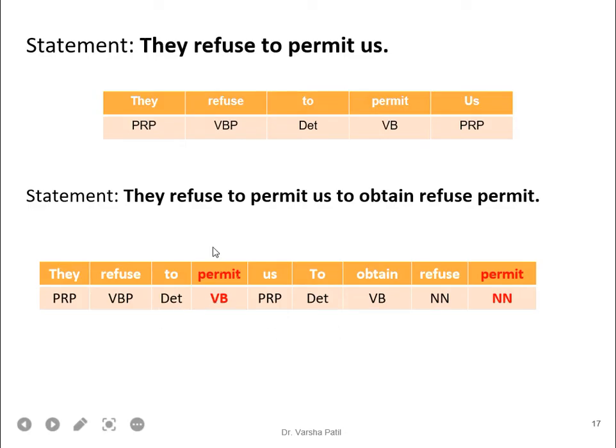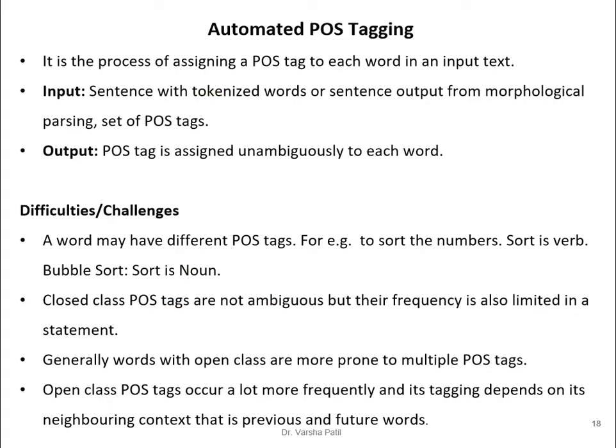Automated POS tagging is the process of assigning a POS tag to each word in an input text. The input is a sentence with tokenized words, or the output from morphological parsing — where we may get multiple possible POS options for a word (verb or noun). The output is a POS tag assigned unambiguously to each word.